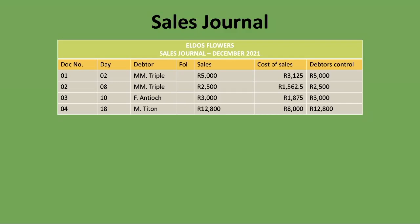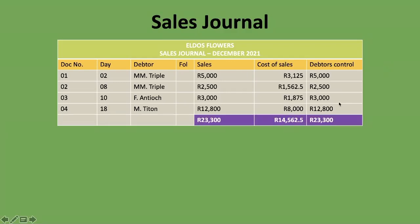Now we add up all the columns. The sales total and the debtors control total are both 23,300 Rand. As a sanity check: 23,300 times 100 divided by 160 gives 14,562.50, which should match our cost of sales total — confirming everything was calculated and added correctly. I hope this lesson has made sense and you've gained value from it. Consider subscribing to our channel, liking this video, and sharing it with those who might find it helpful.